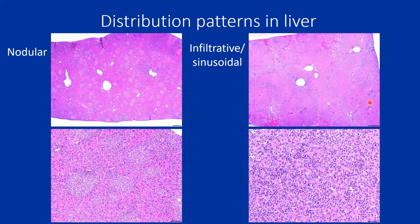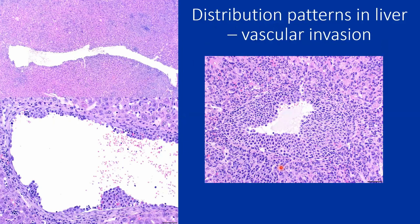Distribution patterns can vary. In the liver you can see it anywhere from really nodular discrete foci to really infiltrative, where you have to look closely to sort out what cells are in the sinusoids interspersed among hepatocytes. It's not uncommon in advanced cases to see vascular invasion. On low mag you can see the internal border of the blood vessel is irregular, with histiocytic sarcoma cells lining it and extending along it.